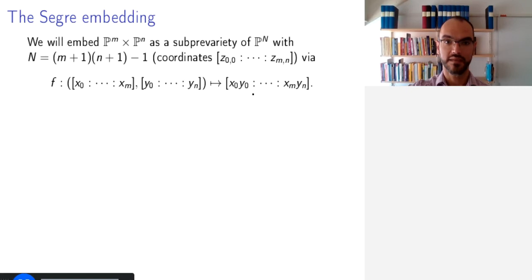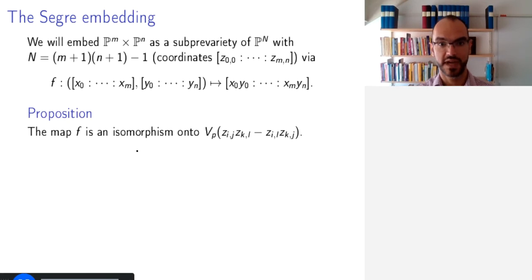And the claim is that this map is an isomorphism between P^M times P^N and the zero set inside P capital N of these polynomials Z_IJ times Z_KL minus Z_IL times Z_KJ for all combinations of I, J, K, and L that are possible.